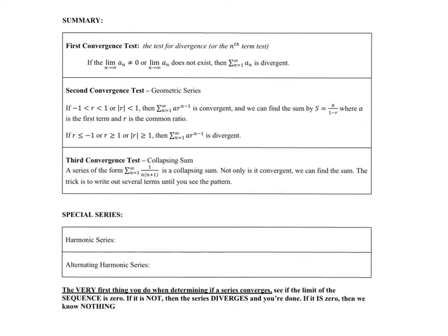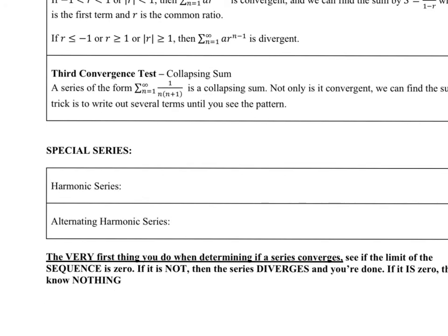The two series we've asked you to memorize: first is the harmonic series — the sum as n goes from one to infinity of one over n — and that's divergent. Then we have the alternating harmonic, which is almost the same but has an alternating sign, and that's convergent. Those are two we want to be able to identify quickly and compare to other series.